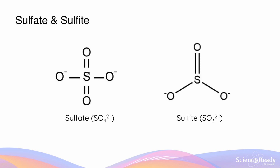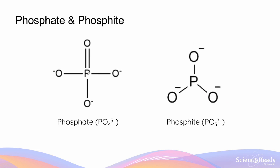For sulfate, we have a sulfur atom bonded to four oxygens, two of which are negatively charged, accounting for the overall charge of two minus. For sulfite, again two of the oxygens are negatively charged, giving the same charge of two minus. The structure of phosphate involves a phosphorus atom bonded to four oxygens, three of which have a negative charge, accounting for the overall charge of three minus. In phosphite, a phosphorus atom is bonded to three oxygens, all of which are negatively charged, giving an overall charge of three minus.